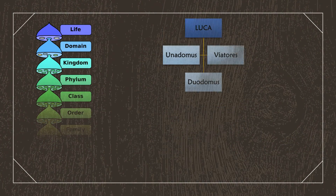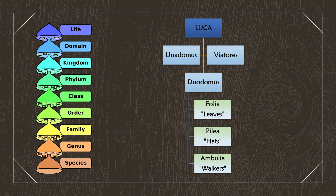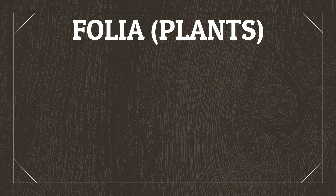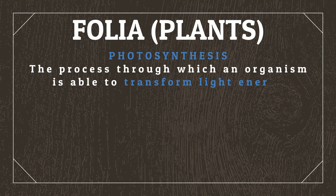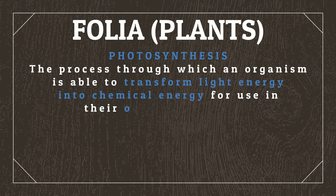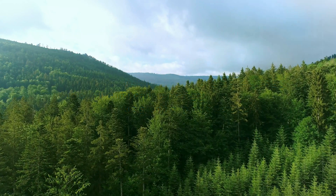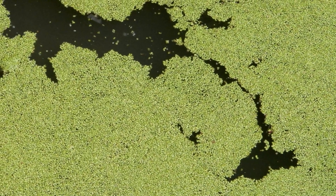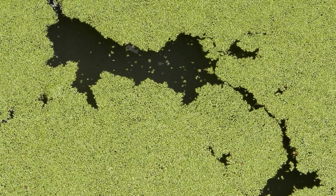From here, we'll be focusing on the multicellular Duodomus, which will also split into three main kingdoms: Folia, Pilia, and Ambulia, representing plants, fungi, and animals, respectively. Folia, like plants, have developed photosynthesis — the process through which an organism is able to transform light energy into chemical energy for use in their organic processes. An excess amount of oxygen is produced, which means that the atmosphere of the planet is going to rapidly oxygenate as Folia become more abundant. In the early stages of Locus's history, Folia would form a thin blanket layer across the ocean surface, asexually reproducing to branch outwards.